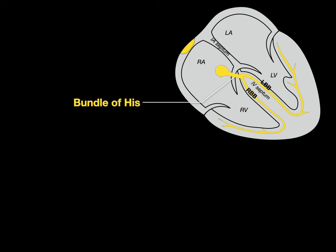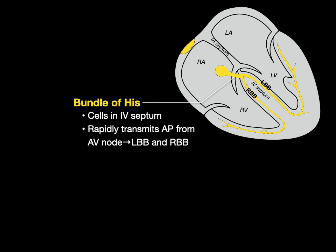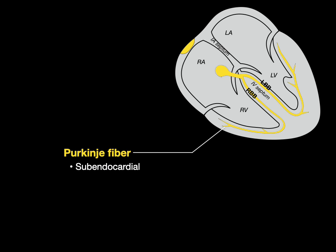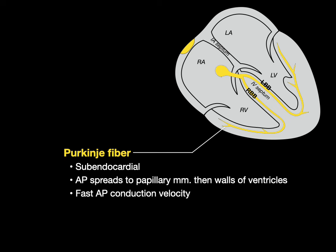The action potential then goes to the bundle of His, which are cardiomyocyte cells in the interventricular septum. This rapidly transmits the action potential from the AV node to the left and right bundle branches with very fast conduction velocity. Finally, the Purkinje fibers in the subendocardial region spread the action potential to the papillary muscles first, then the walls of the ventricle, which ensures the AV valves remain shut during systole. They also have fast action potential conduction velocity.